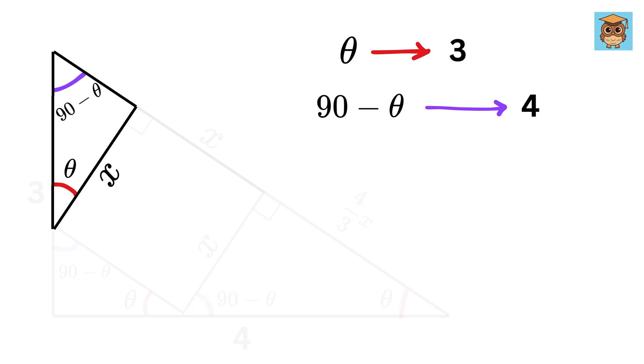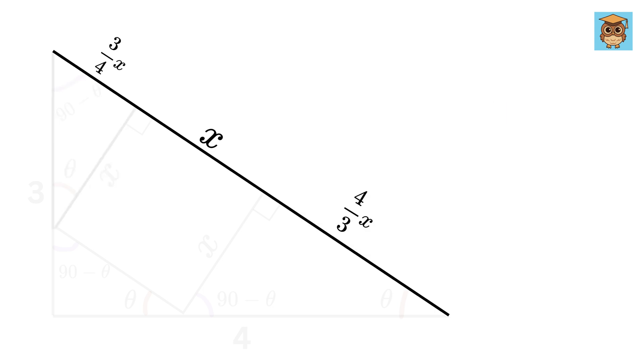Now, in this triangle, side opposite to 90 minus theta is x. Therefore, this side will be 3 by 4 times x. Next, add all these 3 sides to get x, plus 3 by 4 times x, plus 4 by 3 times x.